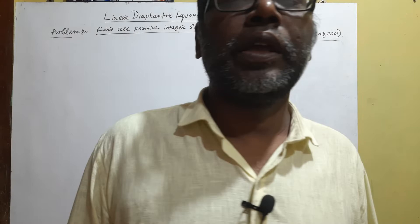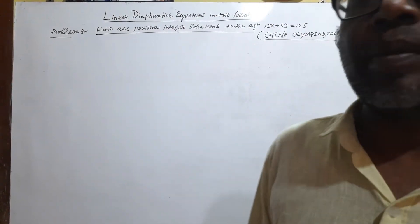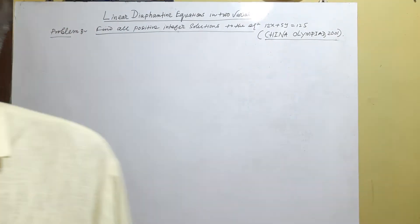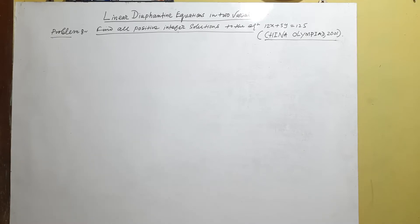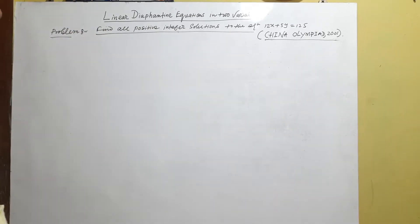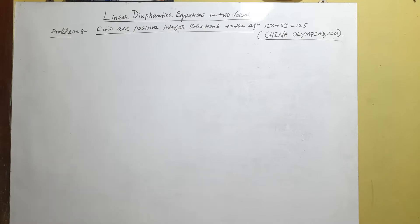Welcome to my channel. This is the discussion about the linear Diophantine equation for two variables. The problem is: find all positive integer solutions to the equation 12x + 5y = 125, from the China Olympiad 2001. In this section we consider the linear Diophantine equation, named after the 3rd century mathematician Diophantus of Alexandria.